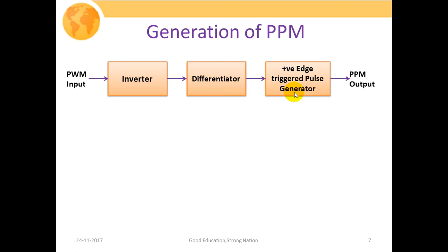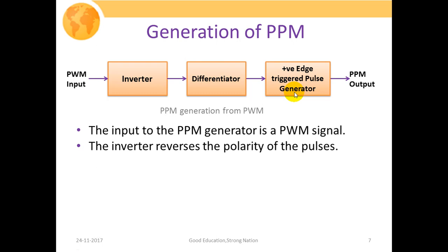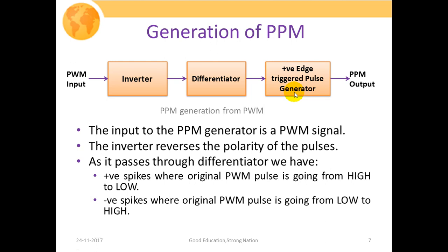The positive-edge triggered pulse generator generates a pulsating output — a fixed-amplitude pulsating signal whose position is dependent upon the amplitude of the message signal — thus generating a pulse position modulation output. The input of the PPM generator is a PWM signal. The inverter reverses the polarity of the pulses. As the inverted signal passes through the differentiator, we achieve positive spikes where the original PWM pulse goes from high to low, and negative spikes where it goes from low to high.